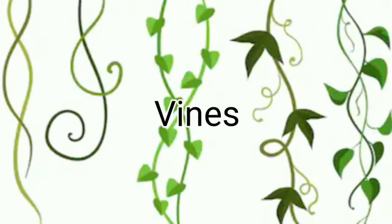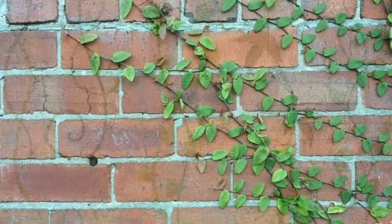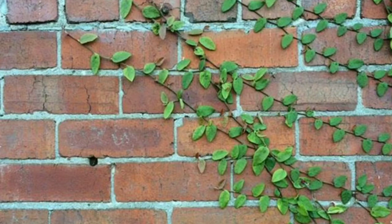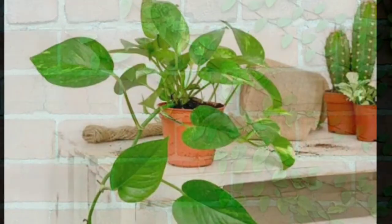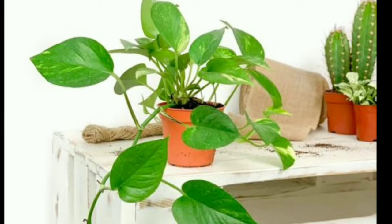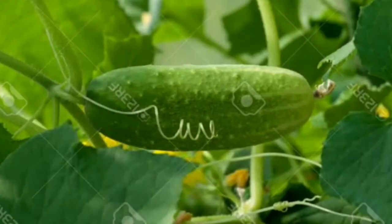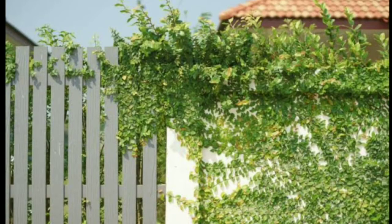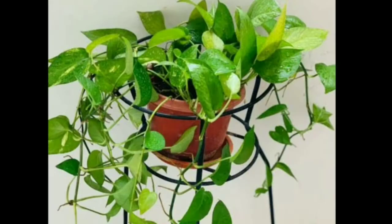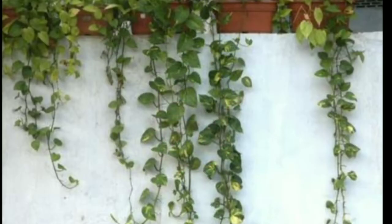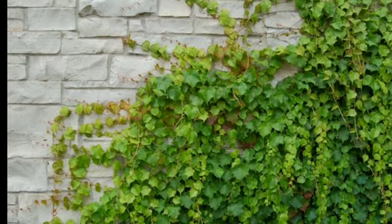Some vines need vertical support for growing, while some others spread on the ground. Climbers like the money plant have aerial roots. Have you seen the cucumber tendrils that look like a spring? The stem of a creeper is very flexible, soft, and green. It grows rapidly with the help of a support.